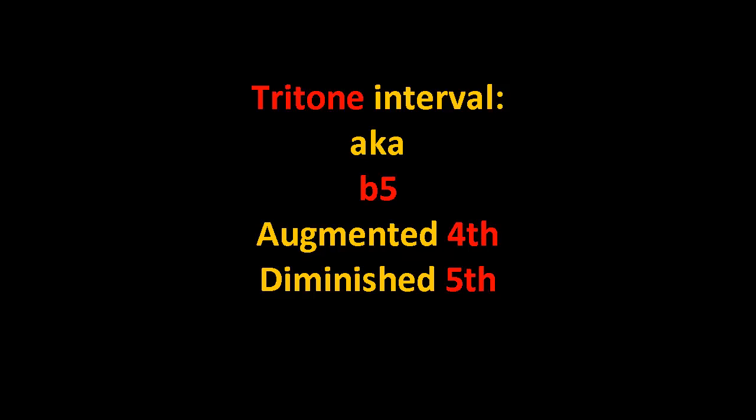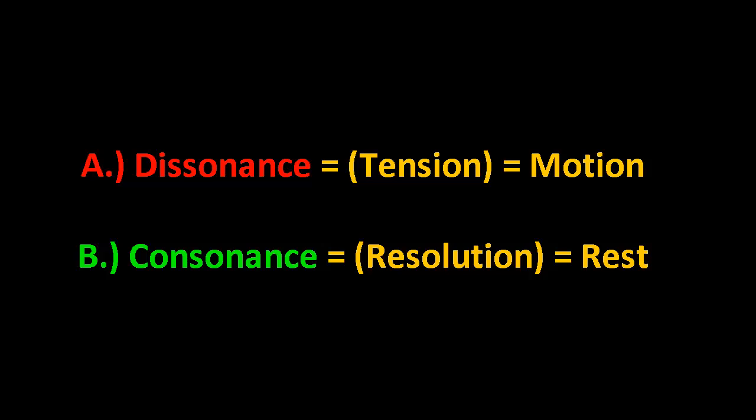So that takes care of what a Tritone is. Let's have a look at how it works. One of the keys to a really good Chord Progression is the control of Consonance and Dissonance. And essentially Dissonance in Music creates Tension which equals Motion. Consonance equals Resolution or Rest.